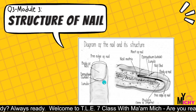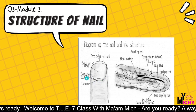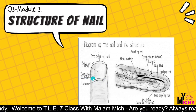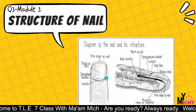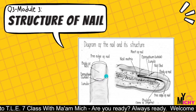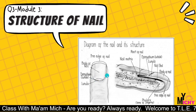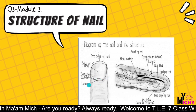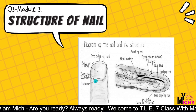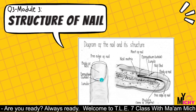We have the eponicium — the curved line here — and the cuticle, which is what we remove. And the lunula — the moon shape here, usually colored white.